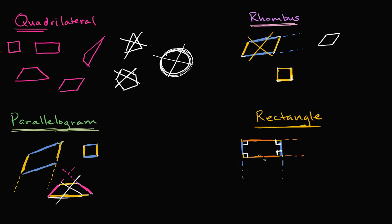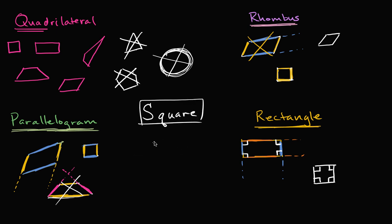But what about a square — is a square a rectangle? A square has opposite sides that are parallel, so it's a parallelogram. And the corners of a square are square corners — that's where the term 'square corner' comes from — they are right angles. So yes, the square is a rectangle. In fact, a square is a really interesting quadrilateral because it falls into all of these categories: a square is a rhombus, it's a rectangle, it's a parallelogram, and of course it's a quadrilateral.